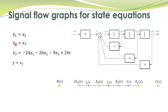Similarly, x2 dot is equal to x3. So this is x2, and if we connect this signal with a branch with gain 1 over s, this signal will be x2 dot, and x2 dot is the same as x3. We are doing the same thing as before but in slightly different notation — here integrators are represented by simple branches and gains, rather than blocks.